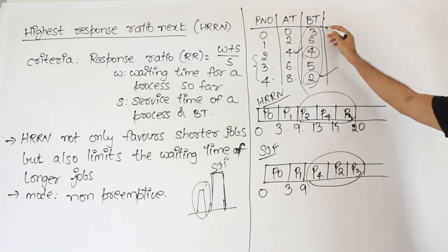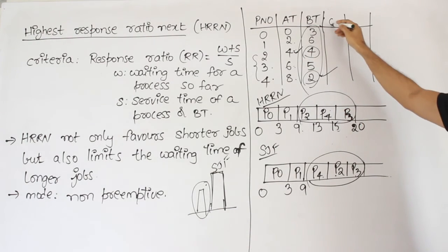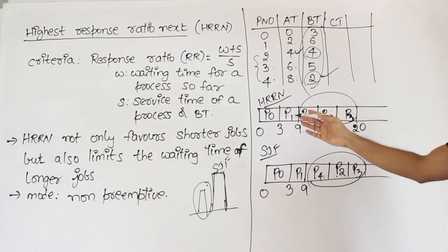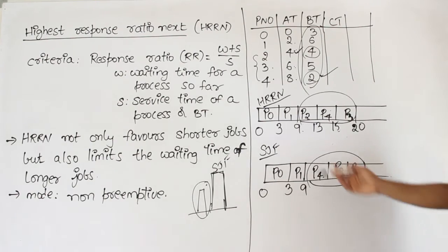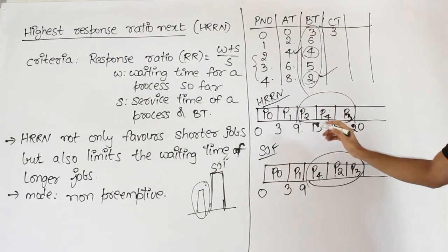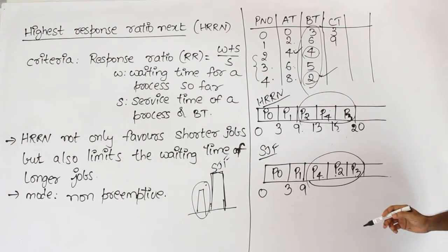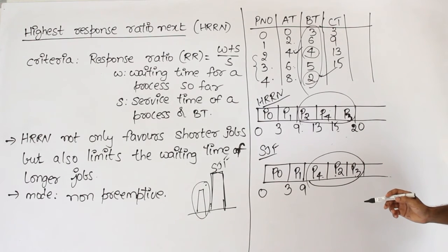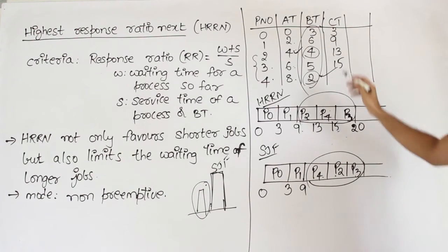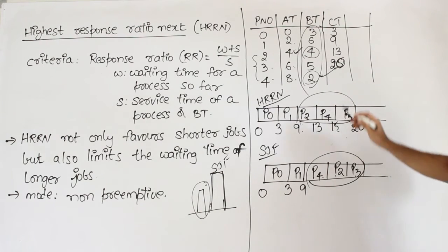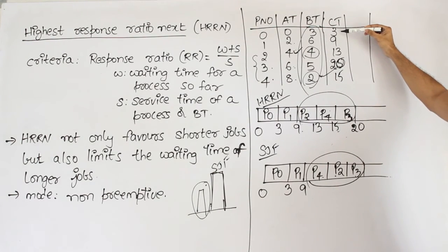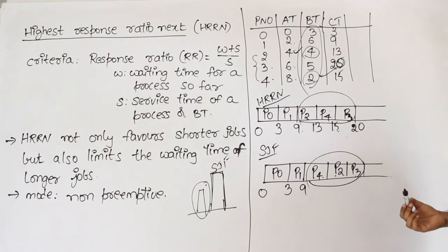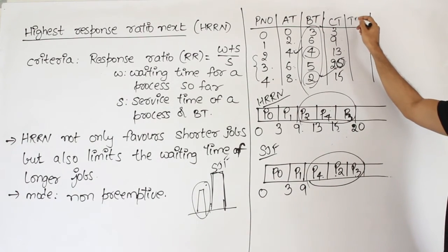Now let's compute completion time, turnaround time, and waiting time for HRRN. Since it is non-preemptive, completion time can be read from either side of the Gantt chart. Completion time: P0 = 3, P1 = 9, P2 = 13, P3 = 20, P4 = 15.